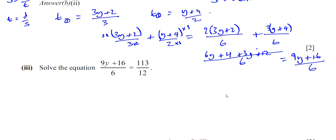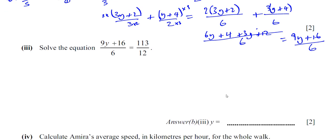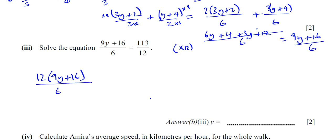Part 3 tells us to solve this equation. To solve this, we'll multiply both sides by 12, since 12 is the LCM of both denominators 6 and 12. So we have 9y plus 16 over 6 equals 113 over 12, multiplied by 12 on both sides. The 12 cancels with the 6, leaving 2, and the 12 cancels with the 12, leaving 1 times 113.